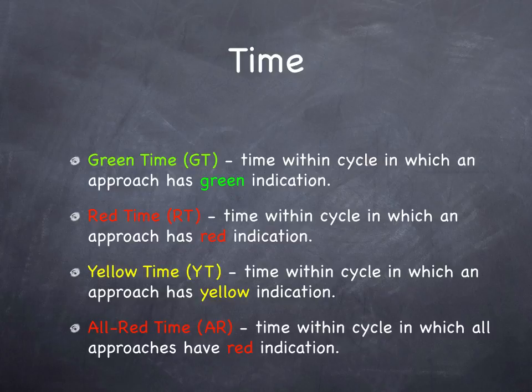We have more definitions. Green time is the time in the cycle with a green indication on an approach. Red time is the time with a red indication. Yellow time is the time with a yellow indication. All-red time is the time within the cycle in which all approaches have a red indication.